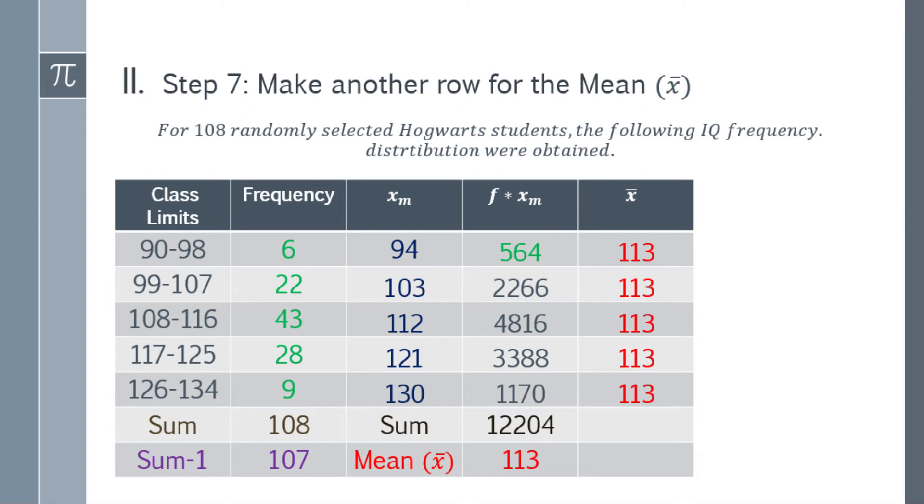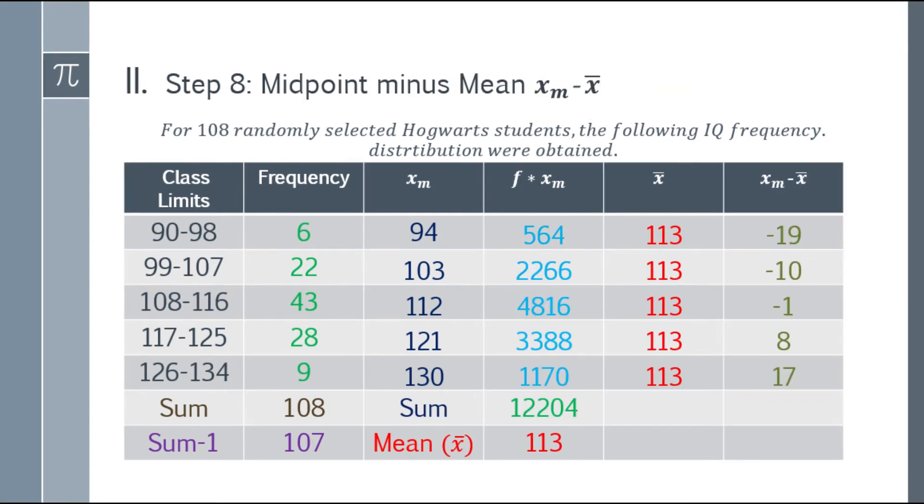Step 7: Make another row for the mean. I added another row for the mean, 113, all in red. Next, step 8: Midpoint minus mean. So x sub m minus the mean (x bar). This is another column. That will be 94 minus 113, blue minus red, which is negative 19. 103 minus 113 is negative 10. 112 minus 113 is negative 1. 121 minus 113 is 8. And 130 minus 113 is 17. So we have another column.